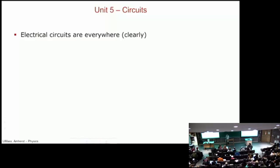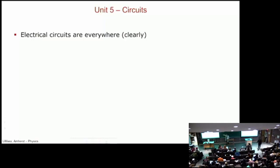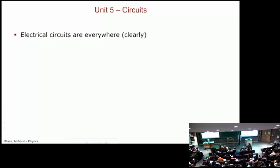My answer to that first question — how many electrical devices do you have on you at the moment — is one for the Surface, two for the remote, three for the microphone, four for the pen, and if you count my phone over in my jacket pocket in the corner, five. And my watch makes six. So I've got six different electrical circuits on me right now.